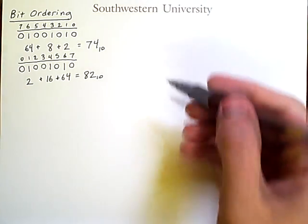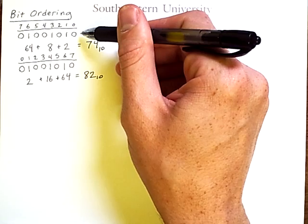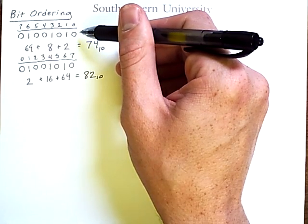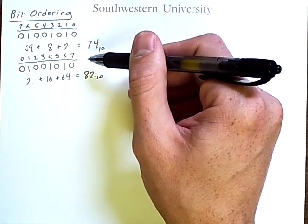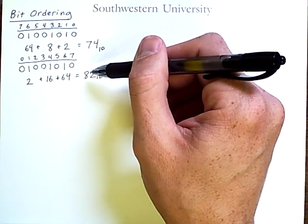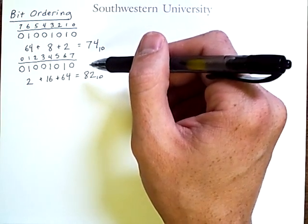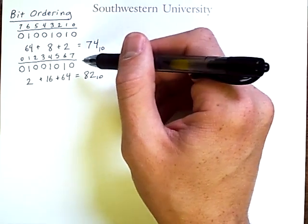Now we will continue using this representation in this course, but it's important to realize that a computer could store its binary numbers in either order and work perfectly fine. In fact, there are names for these two representations.